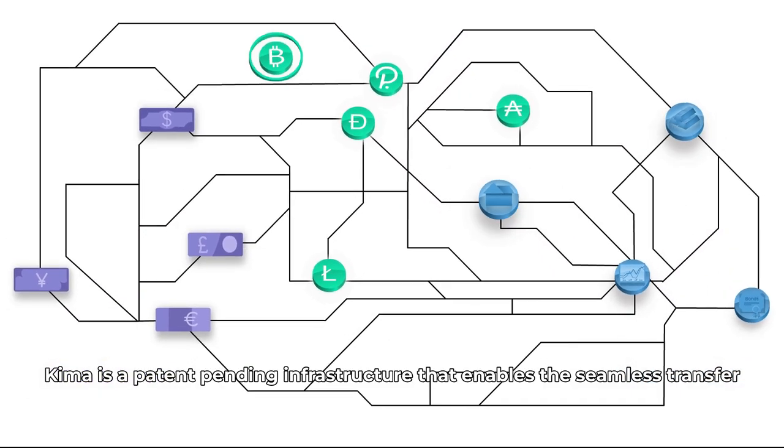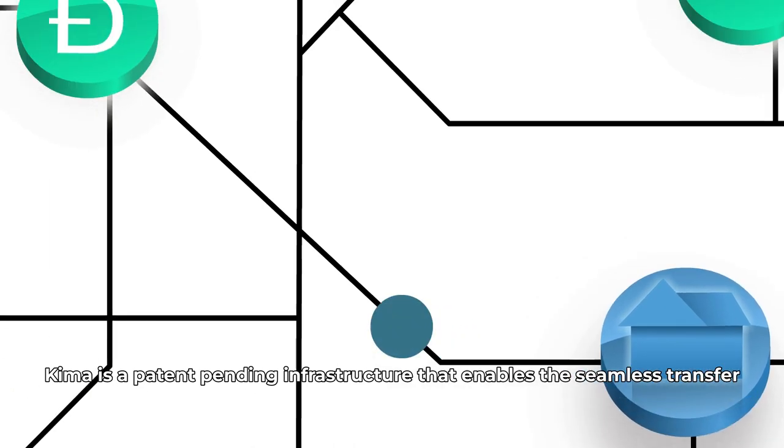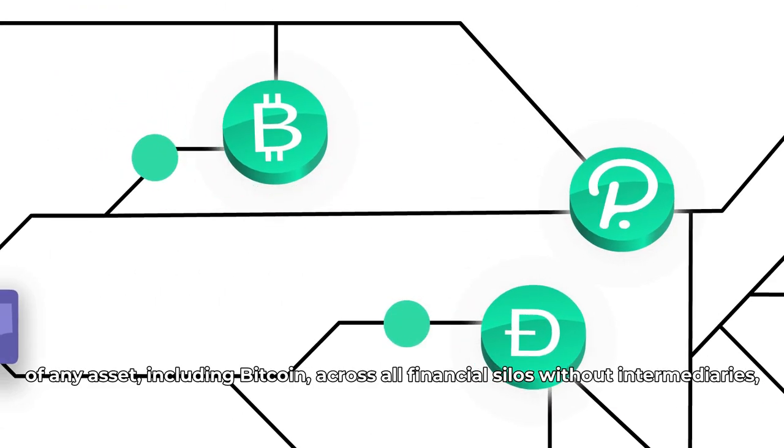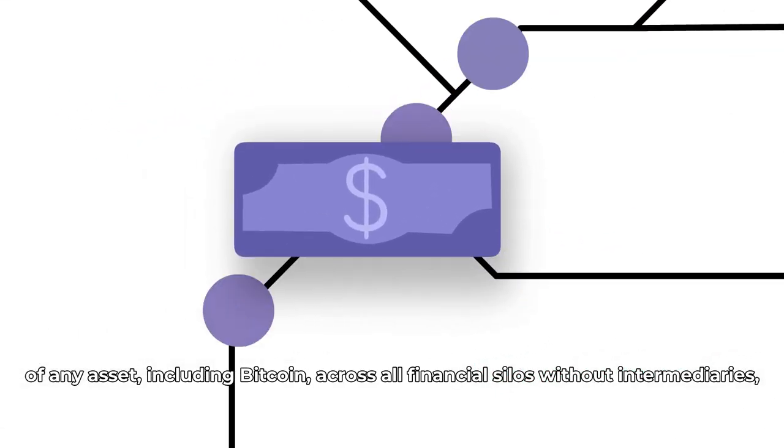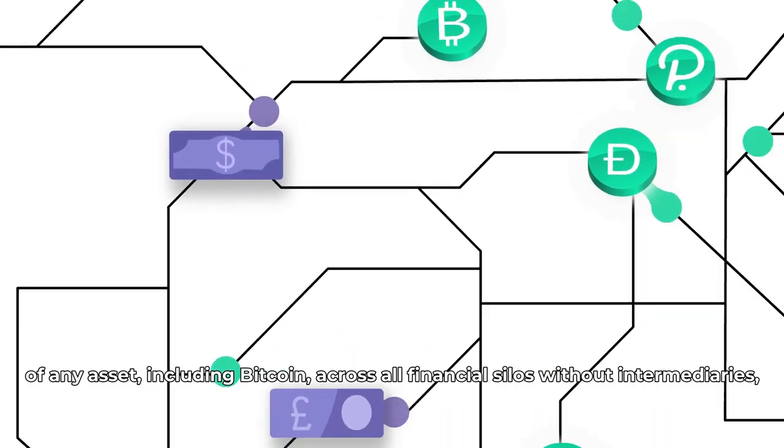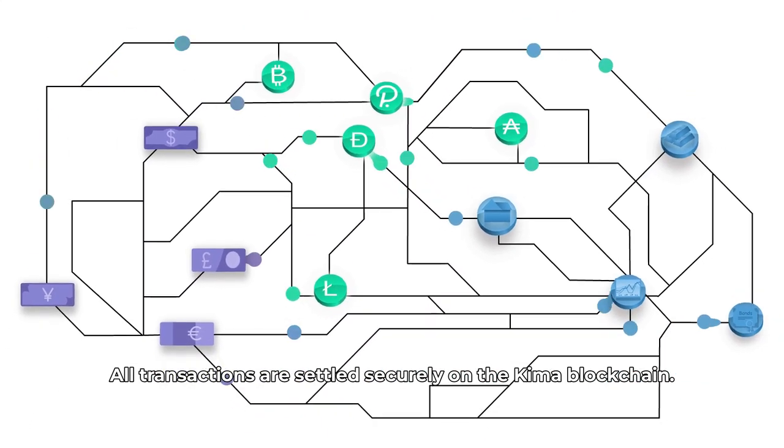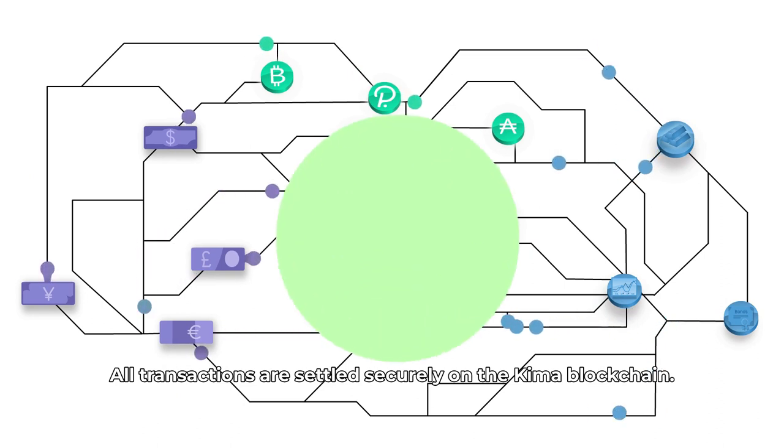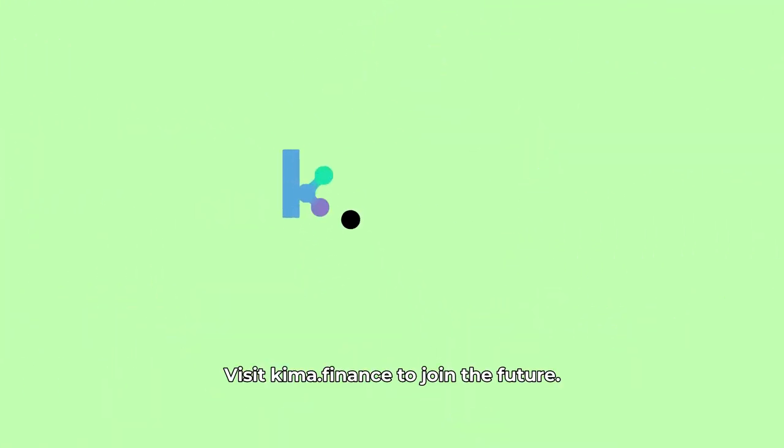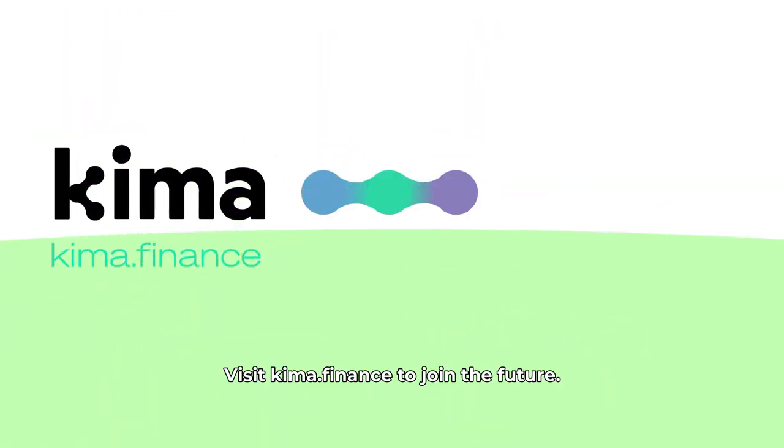Kima is a patent-pending infrastructure that enables the seamless transfer of any asset, including Bitcoin, across all financial silos without intermediaries. All transactions are settled securely on the Kima blockchain. Visit Kima.finance to join the future.